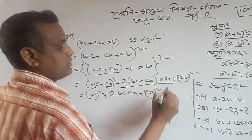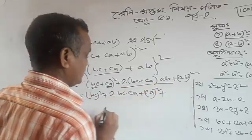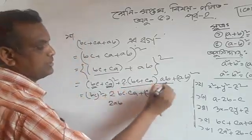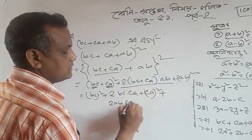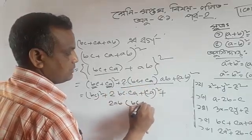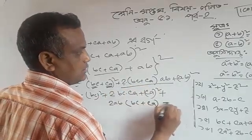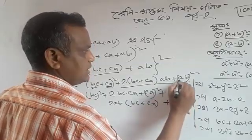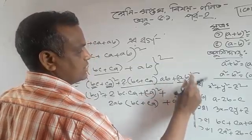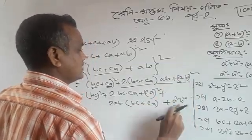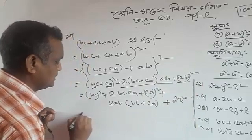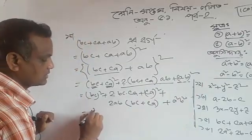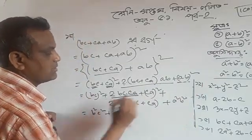You will notice that 2ab — 2ab to get the same change. If you notice, 2ab — 2AB, BC plus CA plus A square. B square, A square and B square. Now the line B square and C square A is the same.